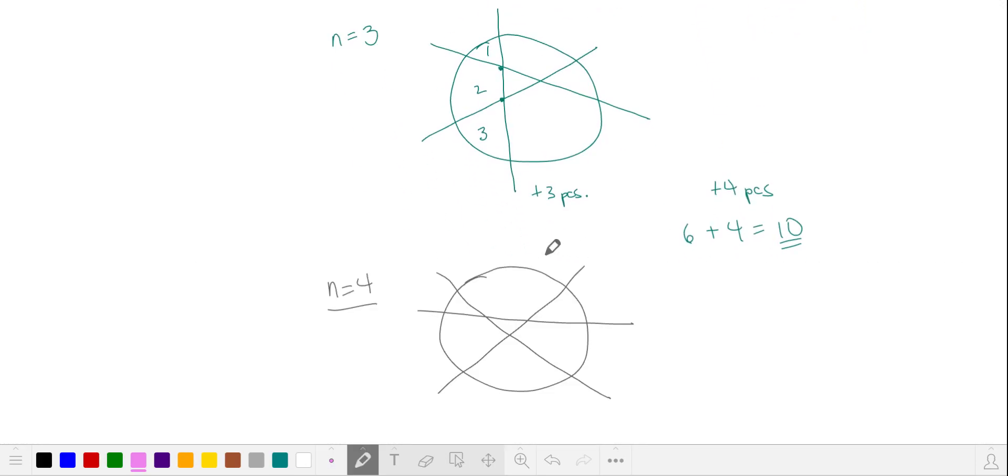Our fourth line, we want to intersect the previous three lines in order to generate the most new pieces, so maybe something like this. I'm going to intersect here, here, and here. That's going to generate one, two, three, and four new pieces.